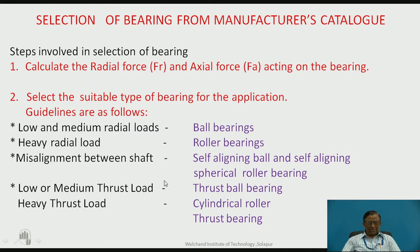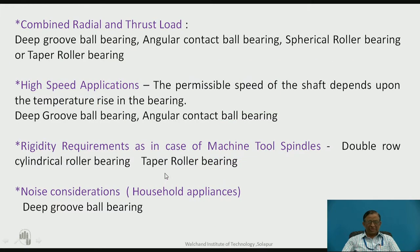In case of thrust load, low and medium thrust loads can be handled by thrust ball bearings, whereas for heavy thrust load, cylindrical roller thrust bearings can be used. If the bearing is subjected to both radial and axial loads, then deep groove ball bearings can be used where radial load is comparatively high but limited thrust load is acting.